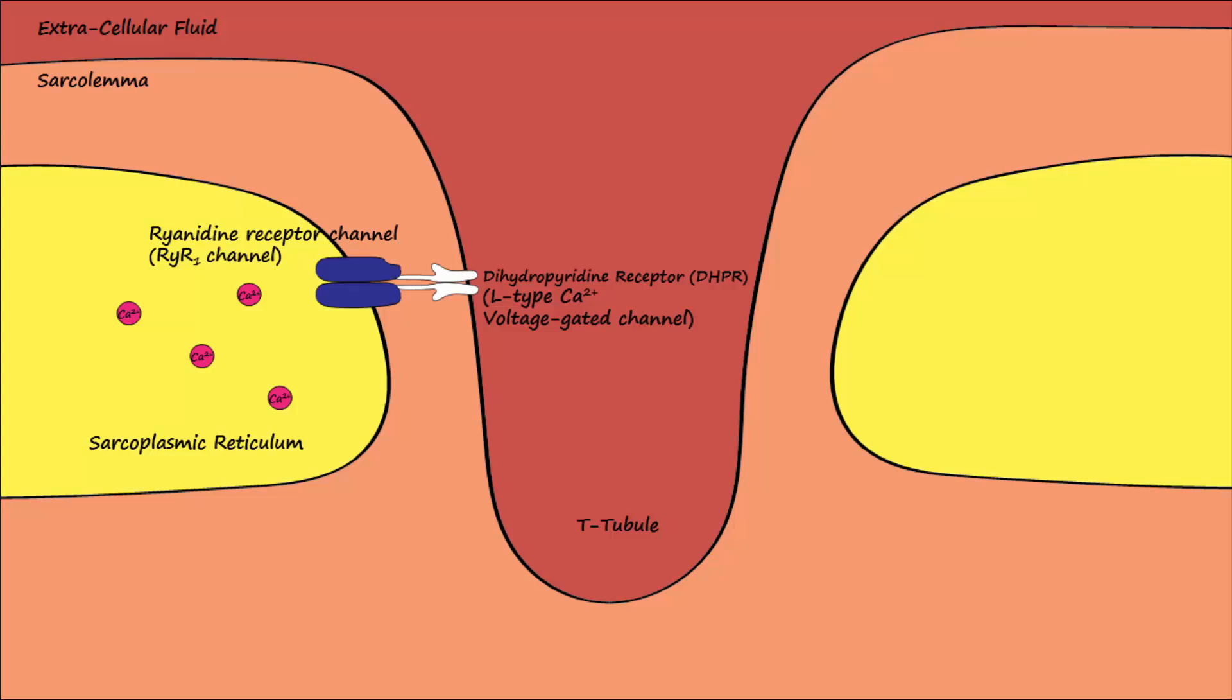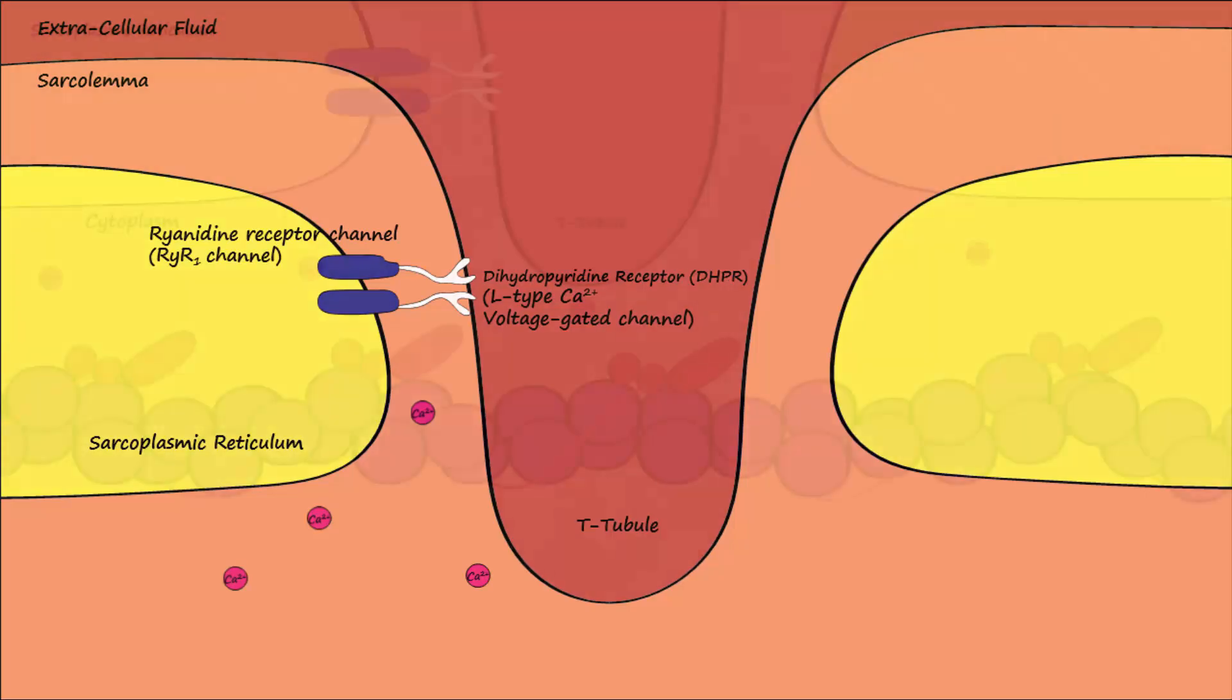Action potentials traveling down the sarcolemma lead to the opening of these channels. Once opened, calcium floods into the cytosol of the cell. The calcium ions then diffuse through the cytoplasm toward the actin filaments, which are composed of G-actin monomers.